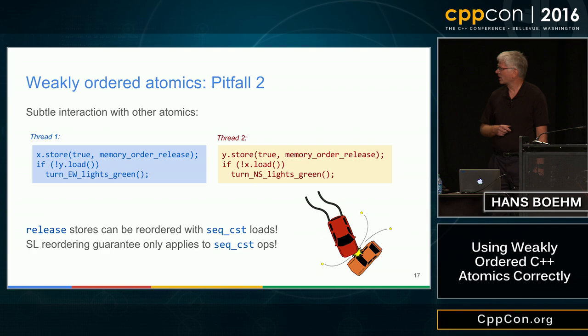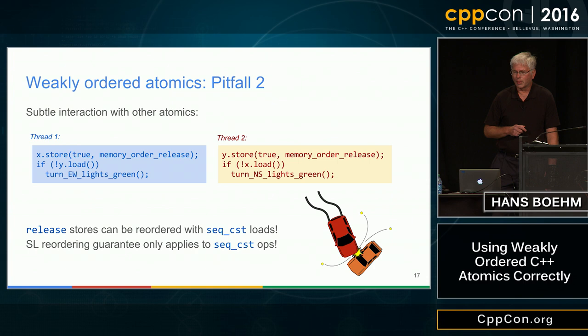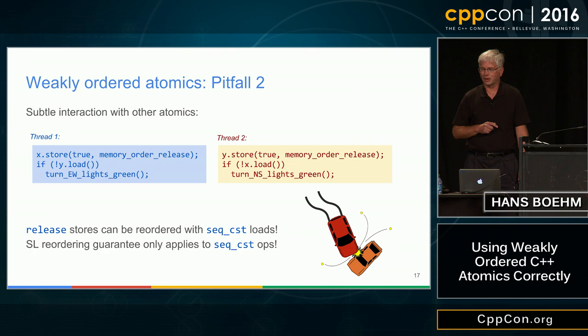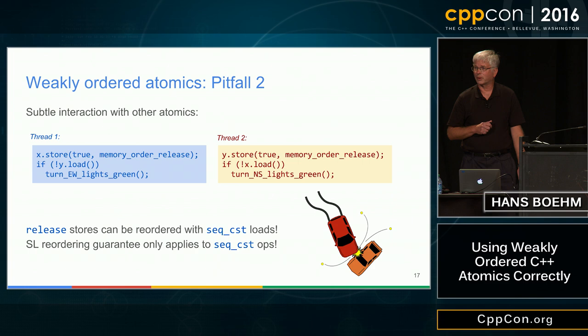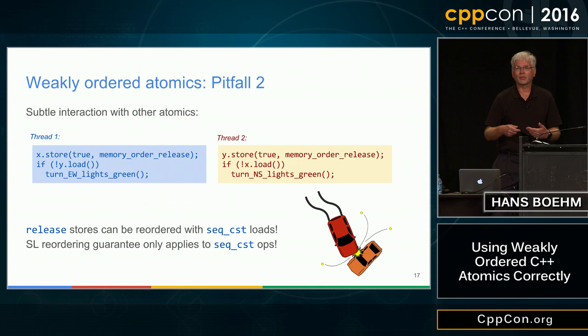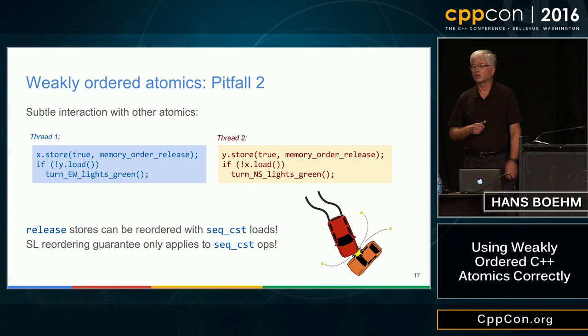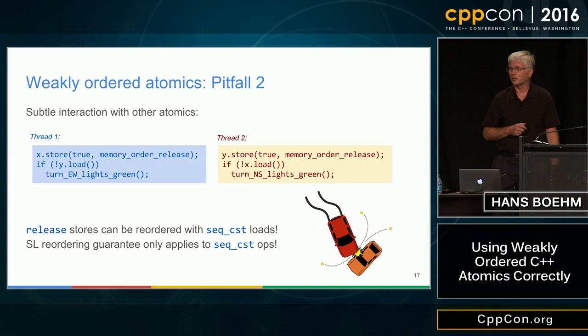The initial pitfall applies to all atomics, not just weakly ordered: you have to be careful about the granularity of atomicity. In particular, x = x + 1 is not the same as x++. x = x + 1 consists of two accesses: an atomic load, an increment, and an atomic store. If two threads do this concurrently, they may both end up reading the same value and writing back the same incremented value rather than incrementing twice. x++ on an atomic int is a true atomic increment — it happens as one indivisible operation, guaranteeing x gets incremented twice if two threads do it concurrently.